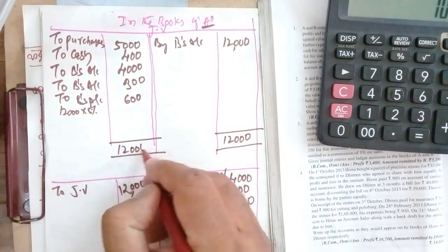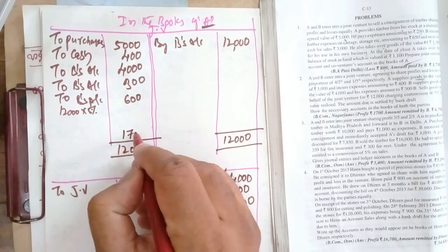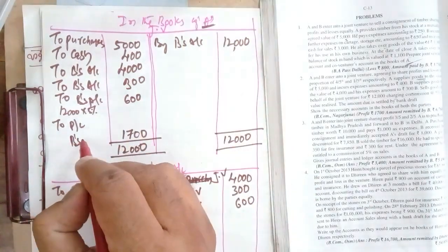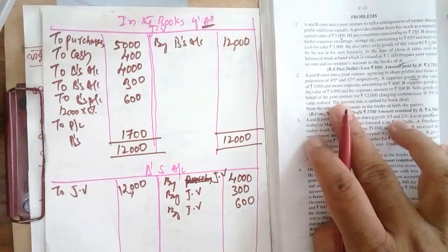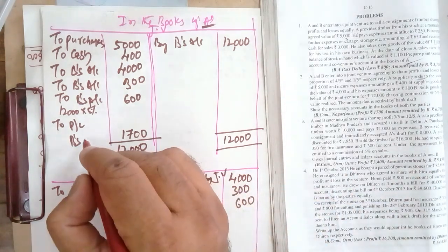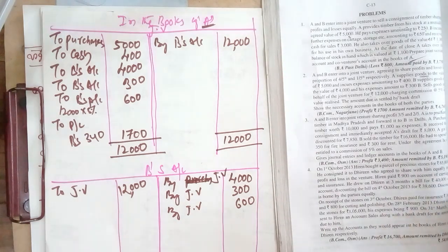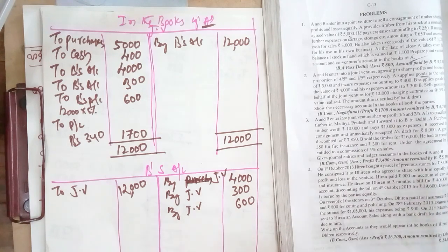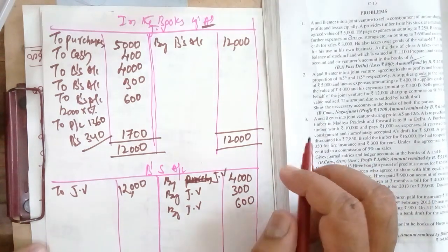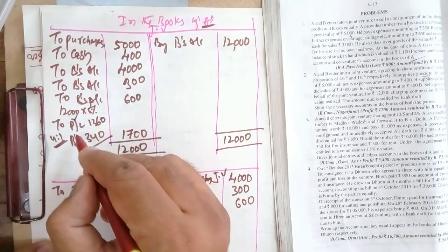The highest value is 12,000. We record 12,000 on both sides. The difference gives us a profit of 1,700. This profit is transferred to P&L account of A and B's account in the ratio 4:1. So 1,700 divided by 5: B gets 340, A gets 1,360. The ratio is 4:1 — A is getting 4 parts, B is getting 1 part.